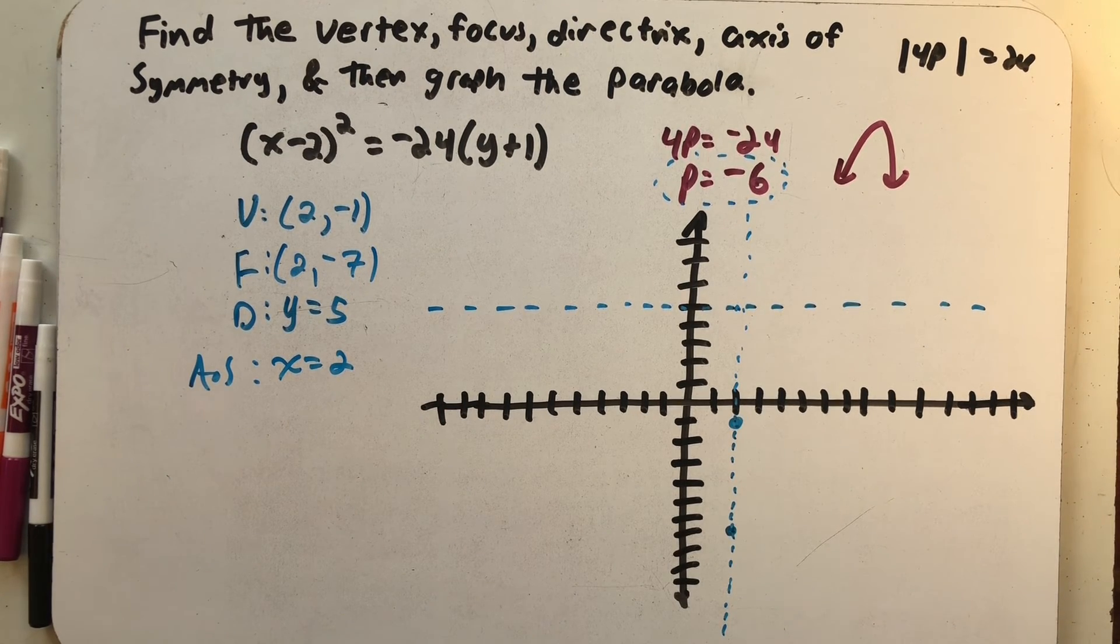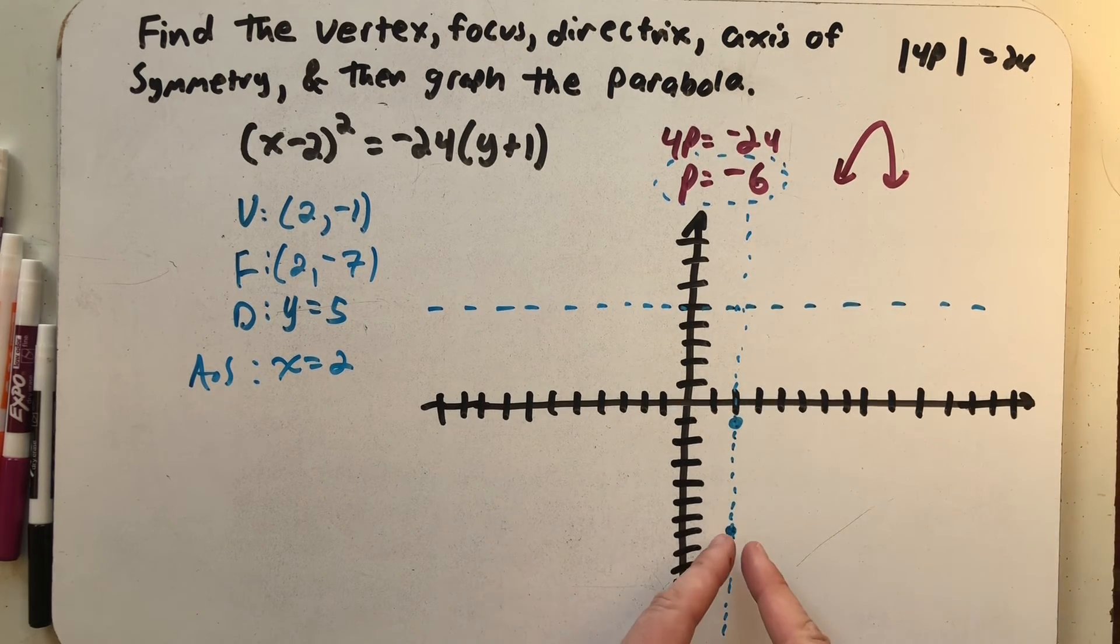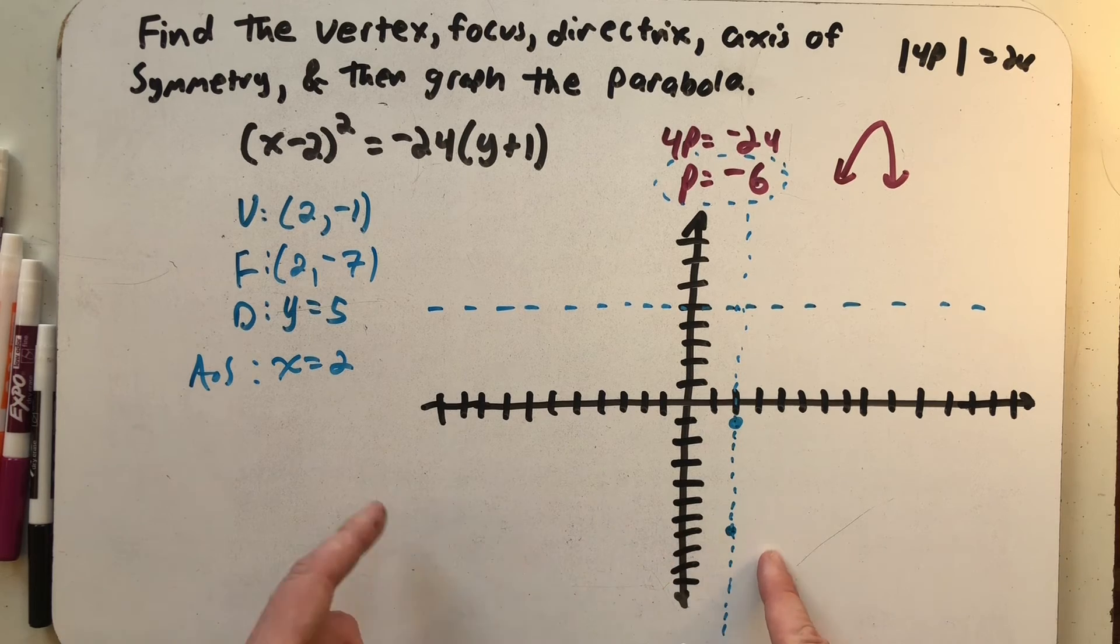Alright, I'm ready to graph our parabola. My focal diameter is 24. So I need to start at the focus and go to the right 12 and to the left 12.